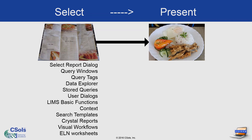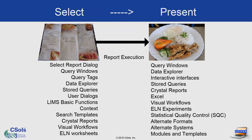On the selection side, you can see a list of different areas we'll discuss, starting with the select report dialogue, query windows, query tags, and more. We'll then move on to briefly talking about report execution and ways of refining and improving that for your lab. And finally, presentation of the data — I'm using a lot of the similar tools as on the selection side, but for the purpose of presenting, so a lot of these options can be combined and reused.